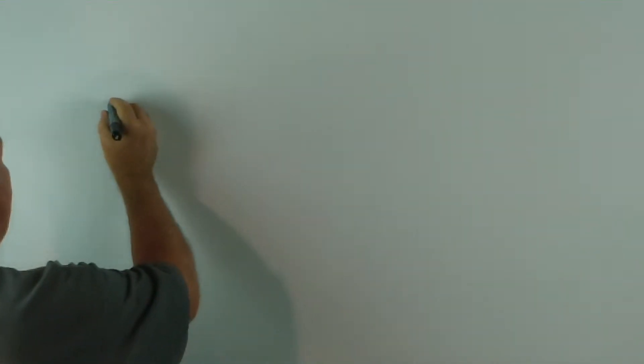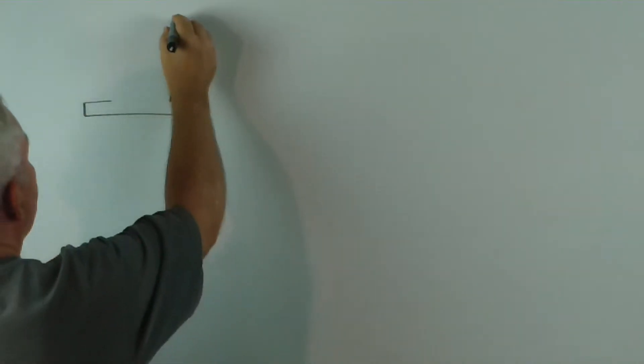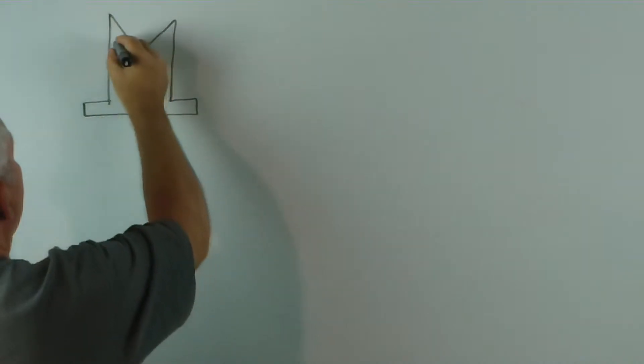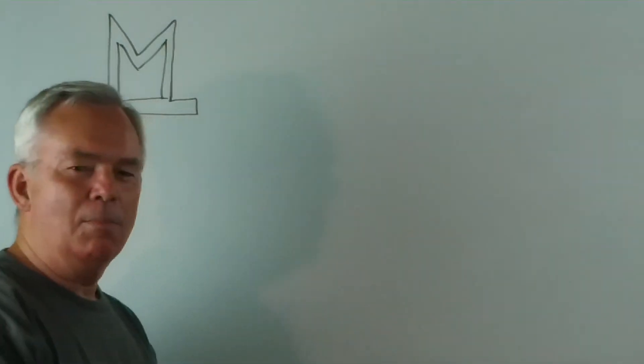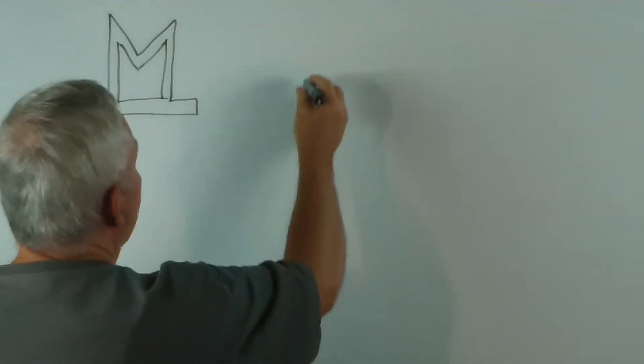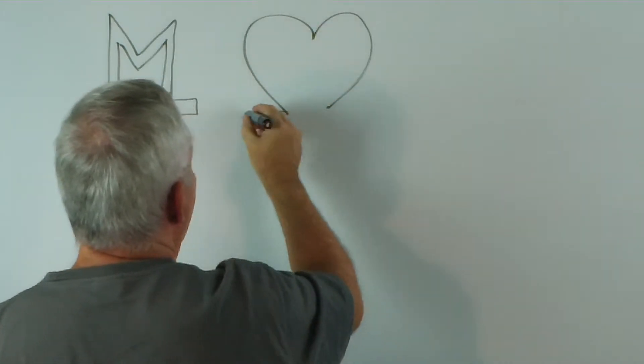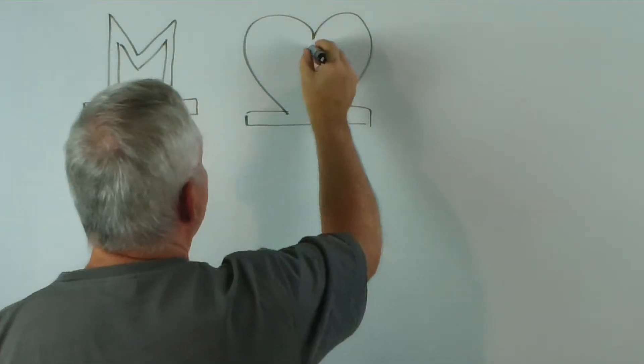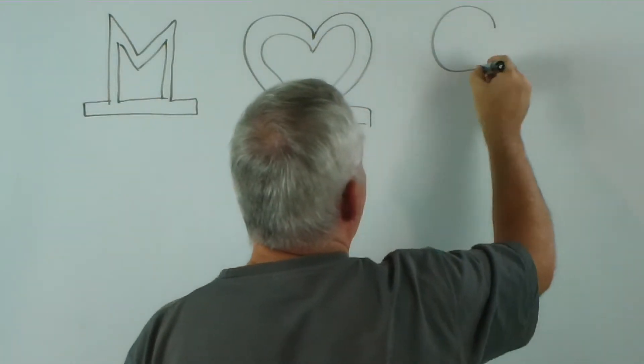Here we go. So, you draw something that looks like an M on a bar. Next one looks like a heart on a bar. Next one looks like a cloverleaf.